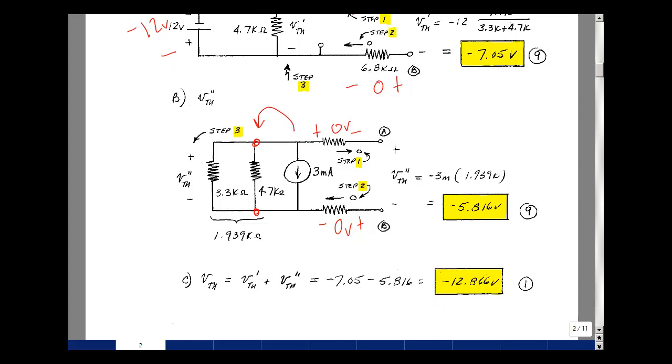Then we have to add up the results for superposition. Adding these two, I get minus 12.866, and that was just worth one point. This was independent of what you solved in the two previous calculations.